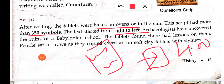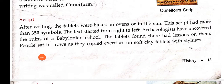Schools — archaeologists have uncovered that Babylonians had schools. The tablets found there had lessons on them. Students sat in rows and wrote exercises on clay tablets. Just as today we write with a pen on paper, they wrote on soft clay tablets using a stylus.